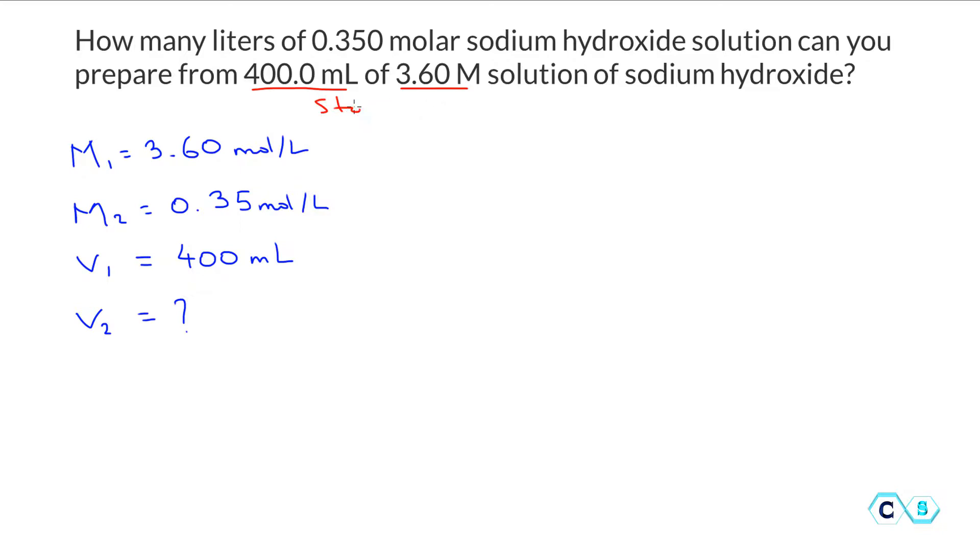So these two together, this is the stock solution, the concentrated solution. And what we're trying to prepare is a new solution which will have a concentration of 0.35. So pay attention here: 3.6 to 0.35, it is diluted, the concentration went down.